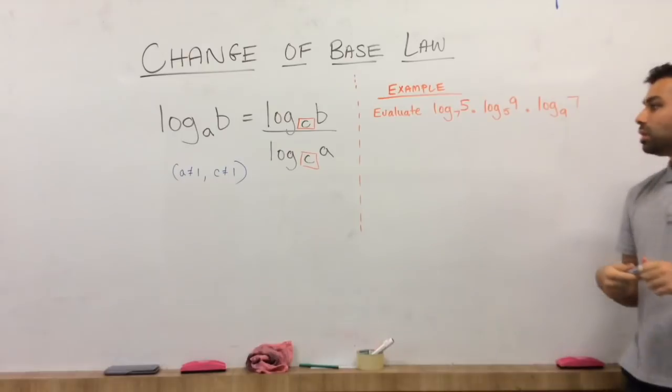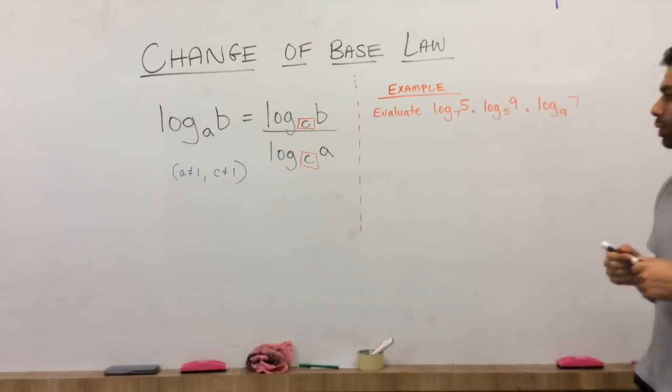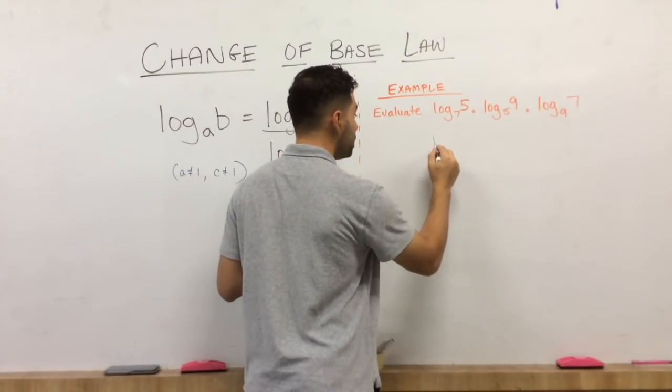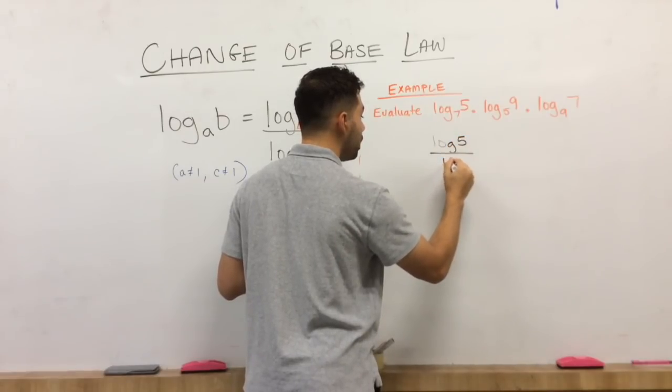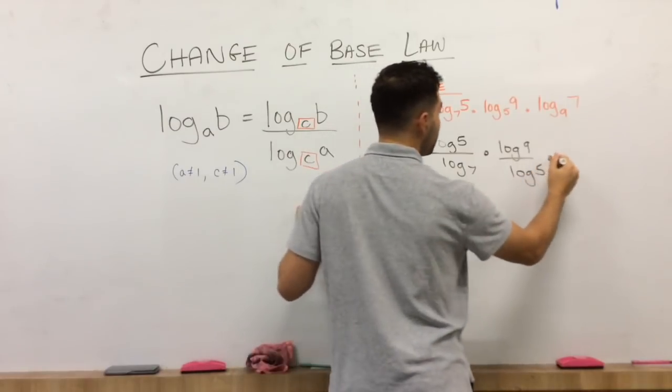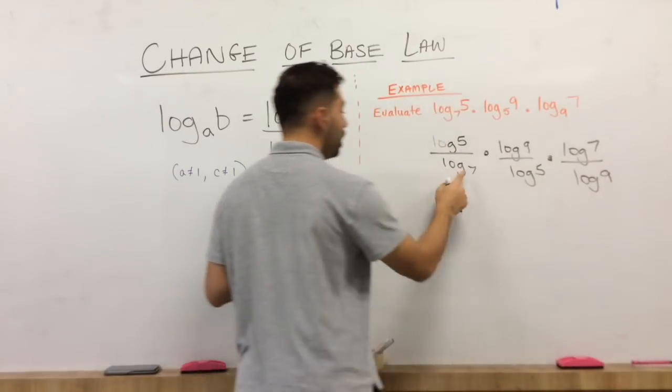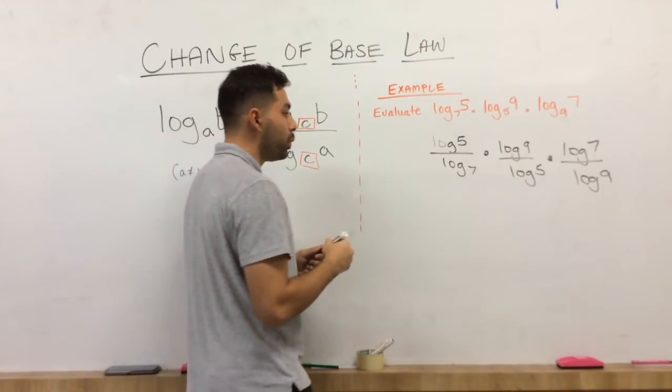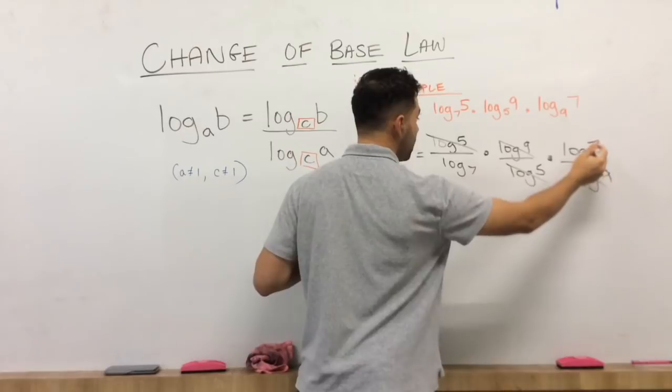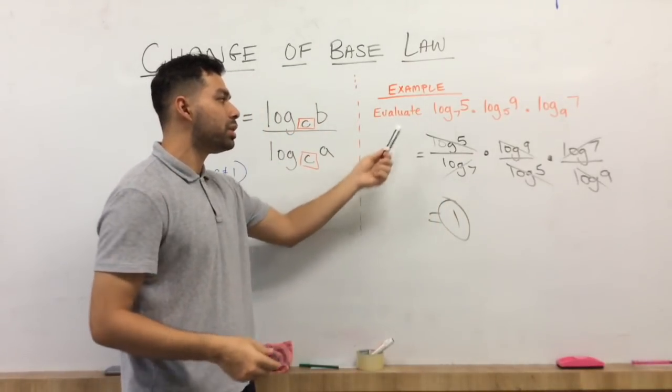Now a quick example of this is if we're evaluating log of base 7 of 5, log of base 5 of 9, times log of base 9 of 7. It really doesn't matter which number you pick for C, you can always assume it's going to be 10. So we can manipulate this as log of base 5 over log of base 7 times log of base 9 over log of base 5 and log of base 7 over log 9. Again, I did not write my base. You can always assume that it is 10. As you can see, log of base 5, log of base 5, they cancel out. Log of base 9, log of base 9, log 7, and log 7. They all end up canceling out. You're going to end up with 1 here. So this is a quick exercise just to get you involved in how to set those up.